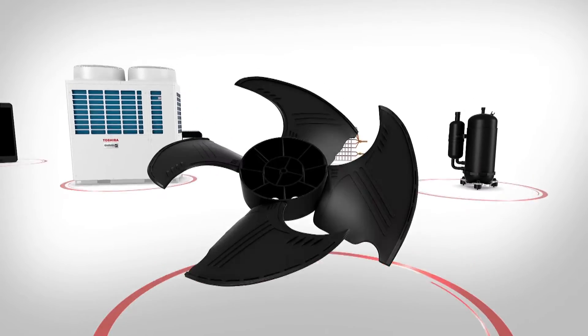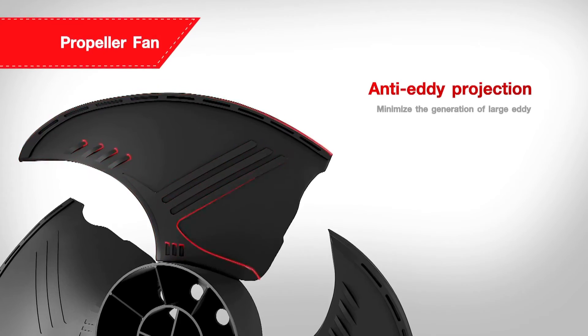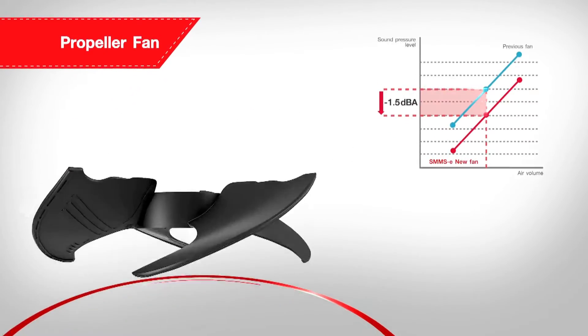The SMM-SE features a new propeller fan to minimize the generation of large eddies. The rear turbulence is reduced by the inventive reverse arc-shaped wing.